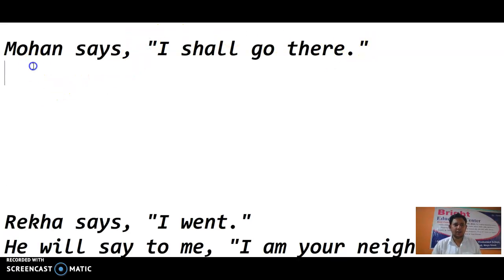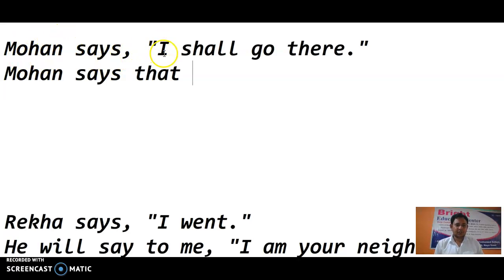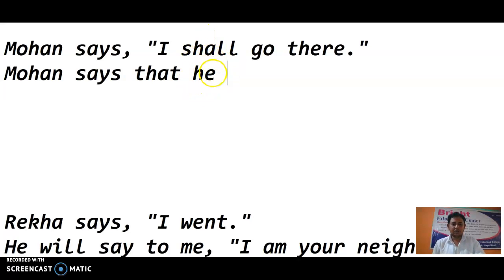Next: Mohan says, 'I shall go there.' Mohan is a proper noun, so first person 'I' becomes third person 'he'. 'Shall' with 'he' becomes 'will', because along with 'he' we use 'will'. Since this is present indefinite, it will not be changed. So: Mohan says that he will go there — that will be the right answer.